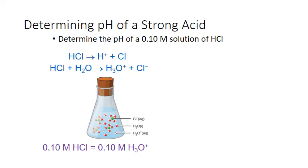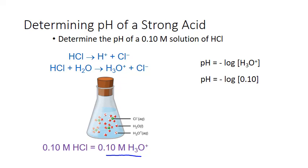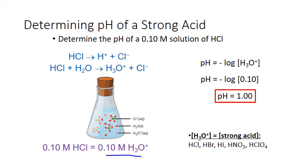Let's calculate the pH of a 0.10 molar hydrochloric acid solution. We know the concentration of hydronium ion equals the original concentration because we have 100% ionization, so we can plug that value directly into the pH formula. The pH is the negative log of 0.10, which equals 1.00. For all strong acids with a 1-to-1 relationship between the acid and hydronium ion, we can make this assumption and just take the given acid concentration and plug it directly into the pH formula.